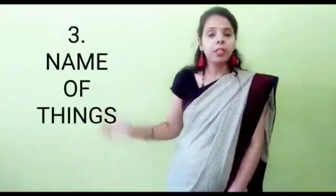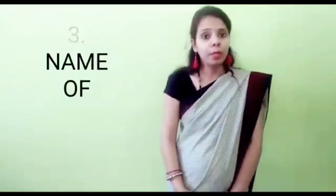Number three: name of things. For example, pencil, rubber, chair, cupboard — these names are called nouns.